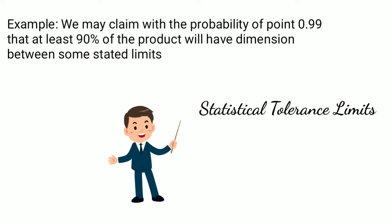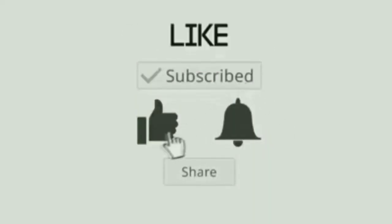These limits are known as statistical tolerance limits. So, we know that there are certain limits under which your product will lie with certain probability. These limits are called tolerance limits.